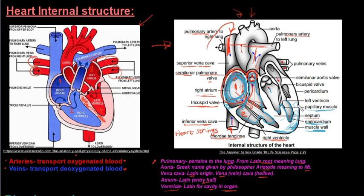The papillary muscles are portions that stick out inside the chambers and are attached to the heart strings. They contract and pull on the heart strings, which in turn pull on the valve flaps to close them when blood passes through. This ensures blood does not flow back into the previous chamber it came from.